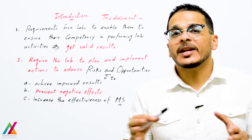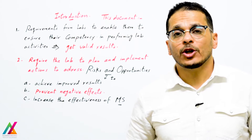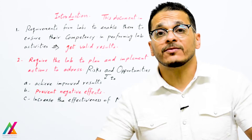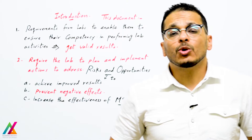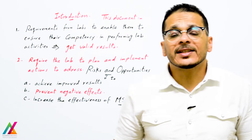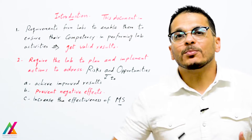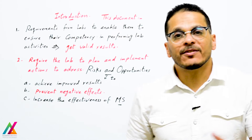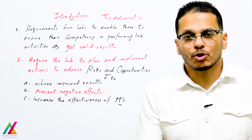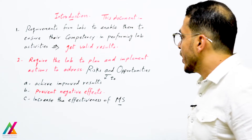The lab must try to eliminate or reduce these negative risks to achieve improved results and increase the effectiveness of the management system. Additionally, the lab shall address all opportunities that may have a positive effect — opportunities that can improve results and increase the effectiveness of the management system, and try to use these opportunities to improve the quality management system.